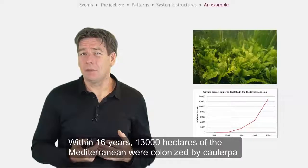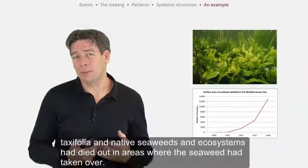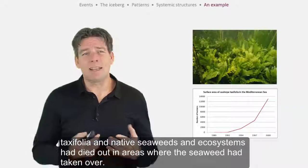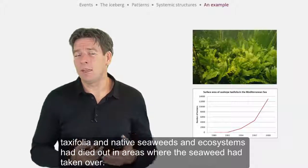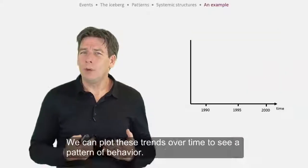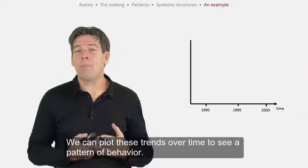13,000 hectares of the Mediterranean were colonized by Caulerpa taxifolia and native seaweeds and ecosystems had died out in areas where the seaweed had taken over. We can plot these trends over time to see a pattern of behavior.